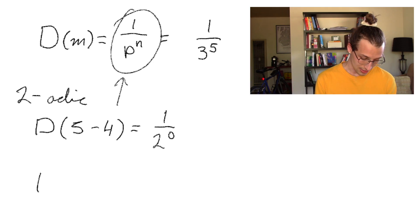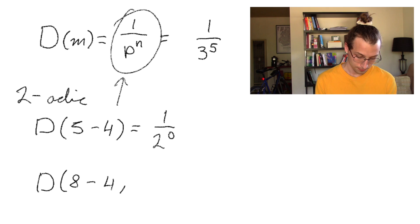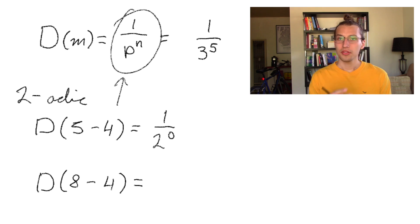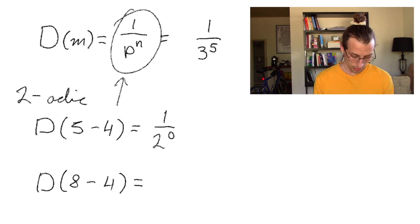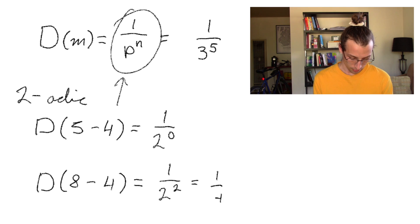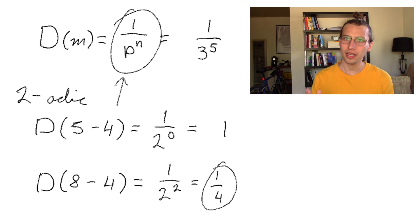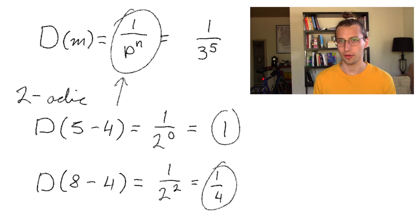Compare that to the distance from 8 to 4. The difference from 8 to 4 is just 4, and 2 goes into 4 two times. So the size of the difference from 8 to 4 is 1 over 2 to the power of 2, which is one fourth. This is 1. So you can see that in a 2-adic system, 8 and 4 are closer to each other - they're only a fourth away in distance - whereas 5 and 4 are a whole 1 away from each other.